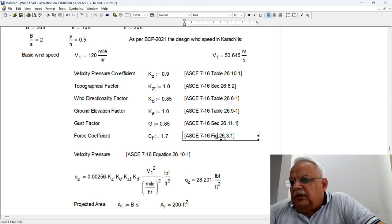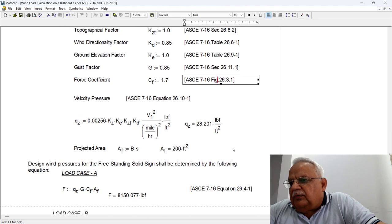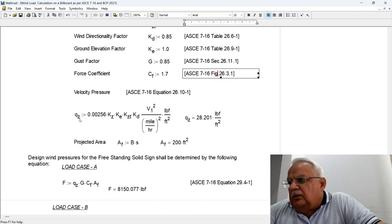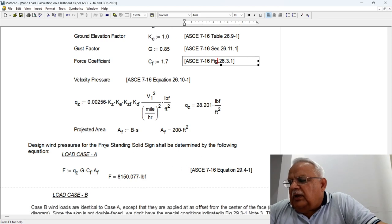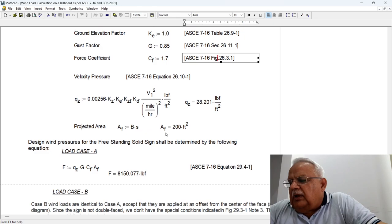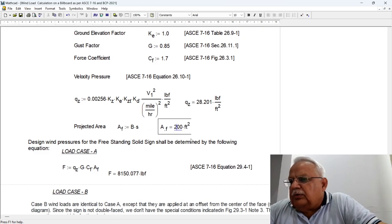The force coefficient for such a billboard is 1.7, and this is from figure 26.3-1 I just showed you before. And then we calculated the velocity pressure, this comes out to be 28.201.